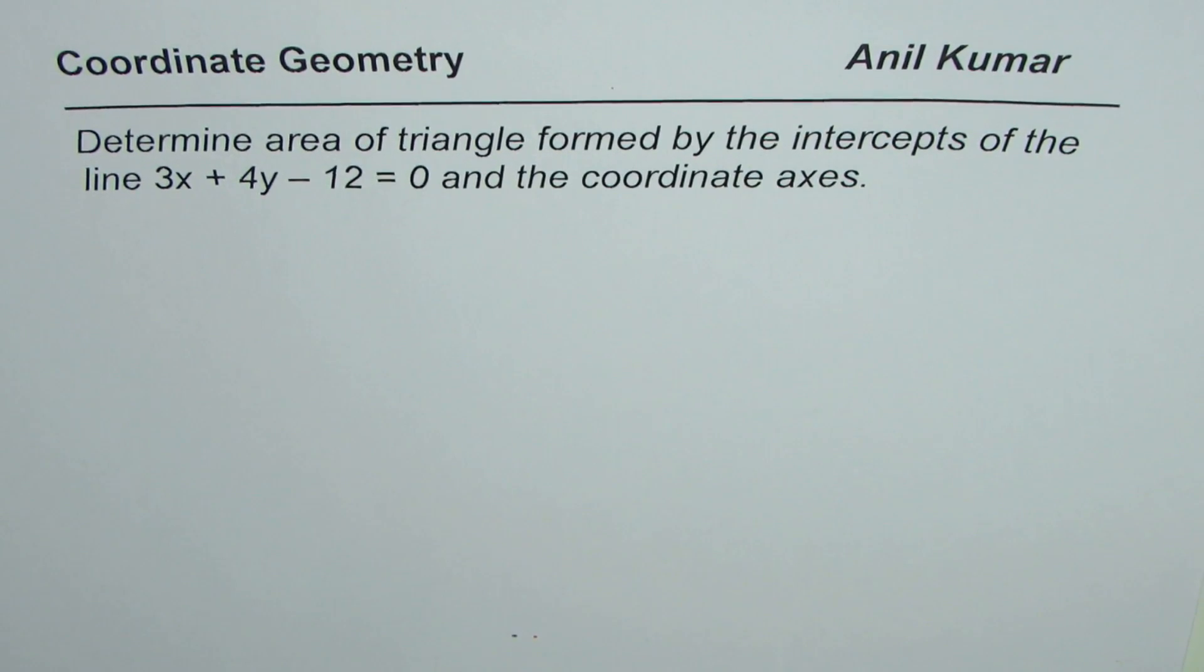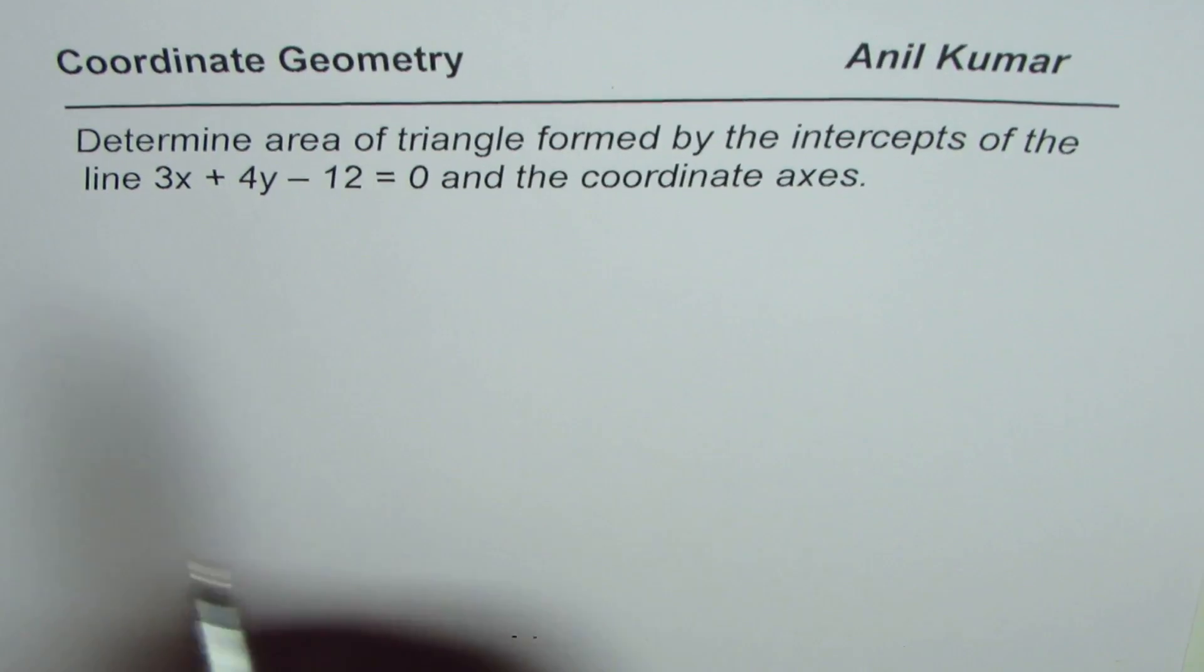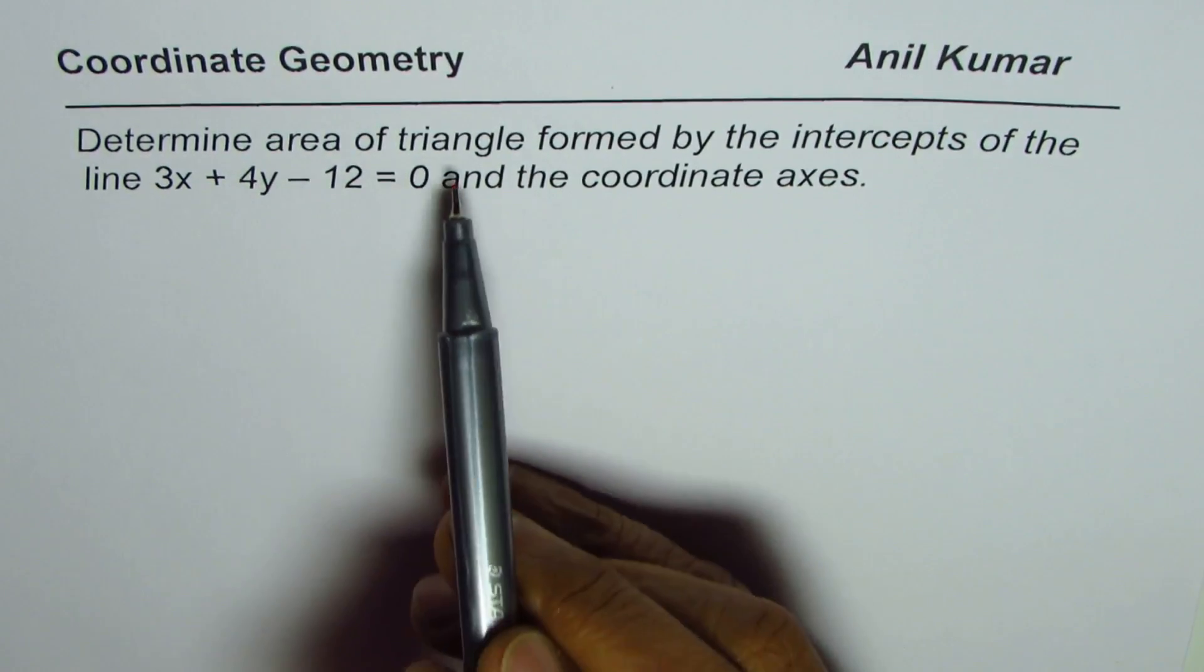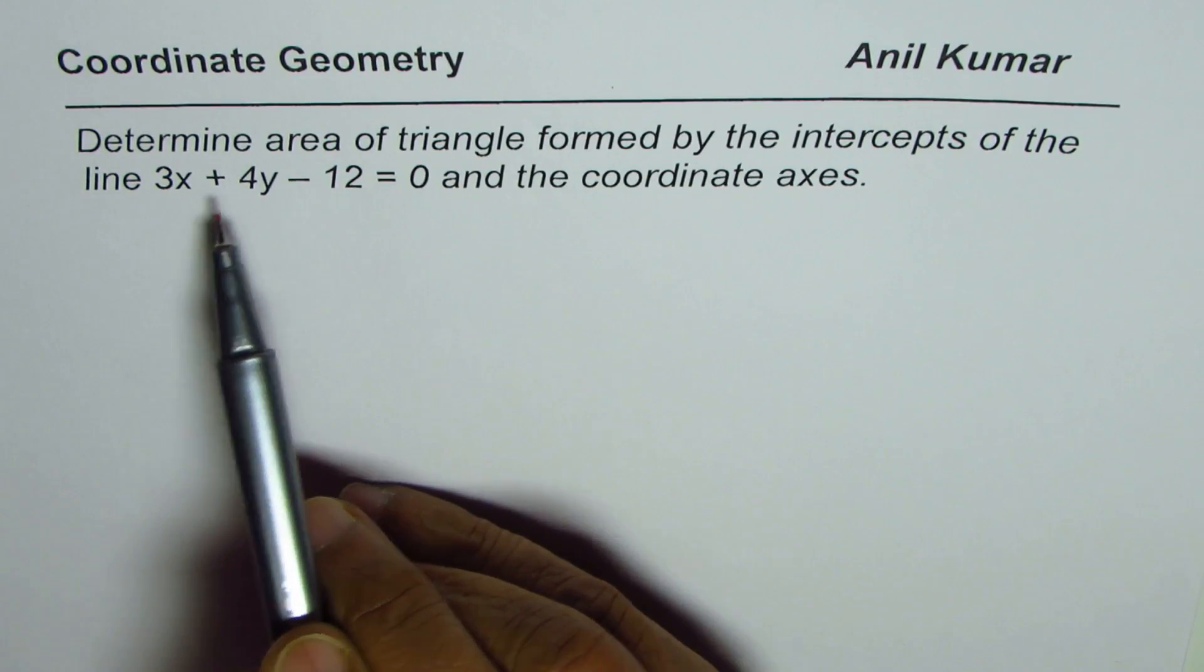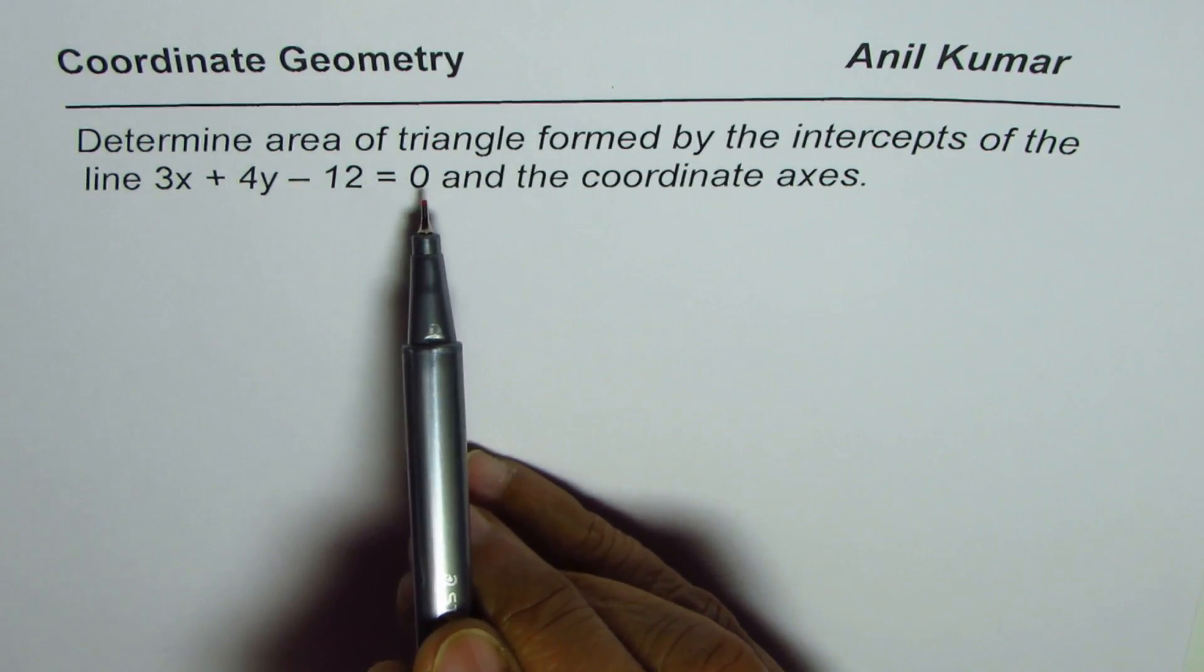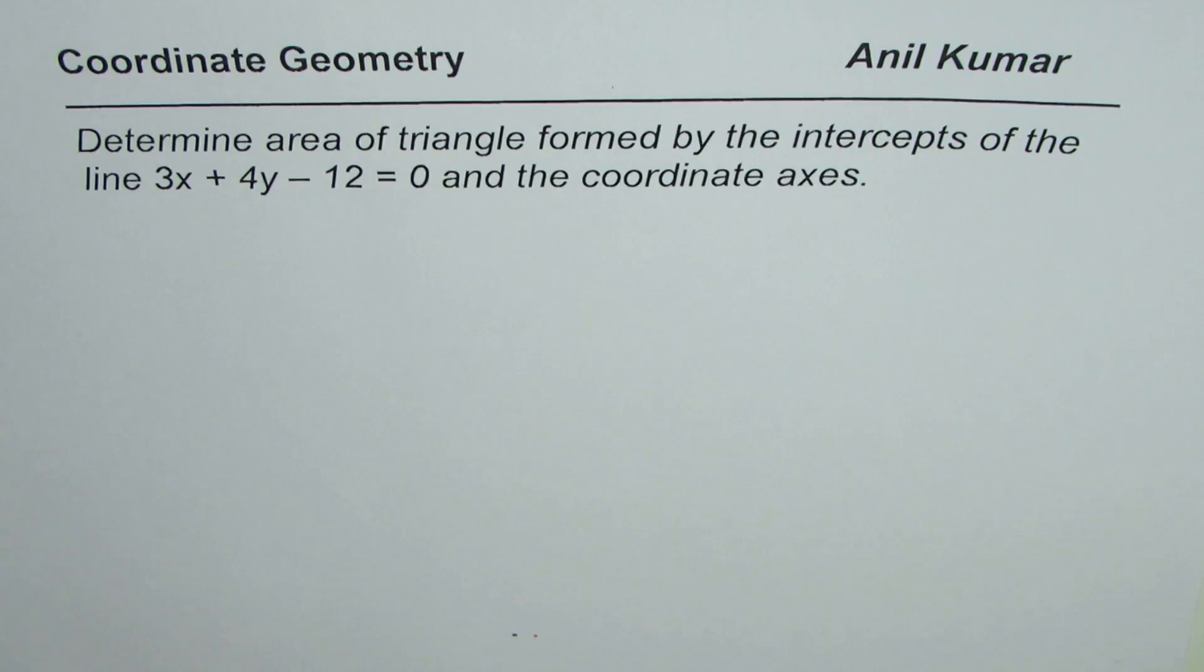I'm Anil Kumar. Here is an interesting question to find area of a triangle. The question is determine area of a triangle formed by the intercepts of the line 3x plus 4y minus 12 equals to 0 and the coordinate axes.